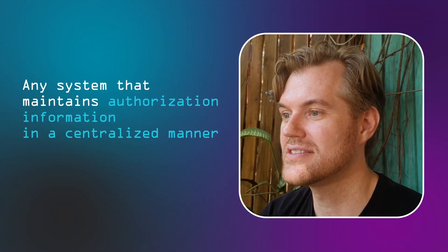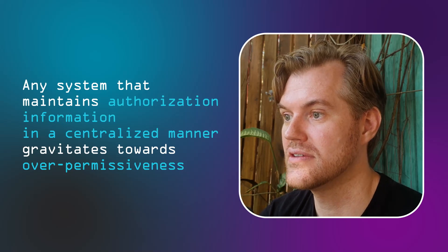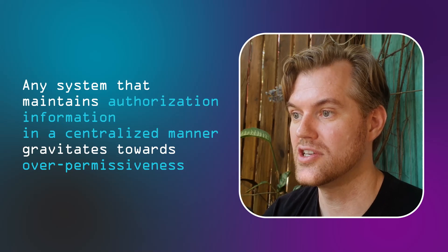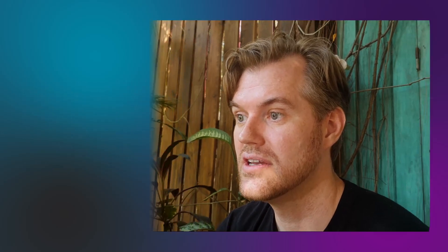In fact, only people in the respective teams know their business processes and know who needs to access what and how that evolves over time. Hence, any system that maintains authorization information in a centralized manner gravitates towards over-permissiveness. Users accumulate permissions just by virtue of being part of some team, not because they need access. The sprawl of permissions can often be pruned through audits, but those are irregular and a lot of work.